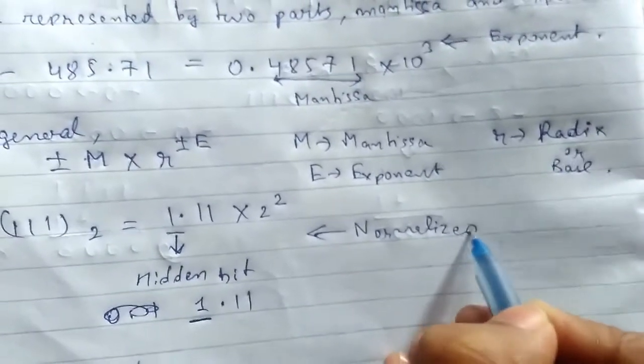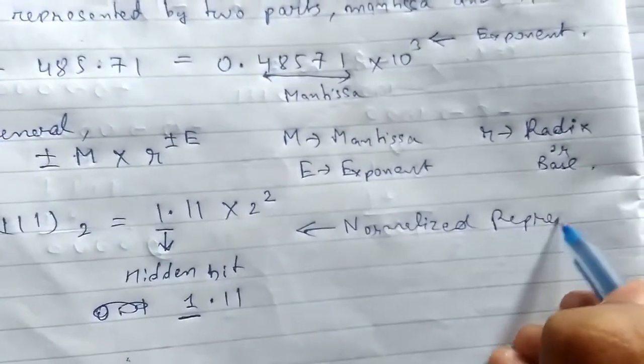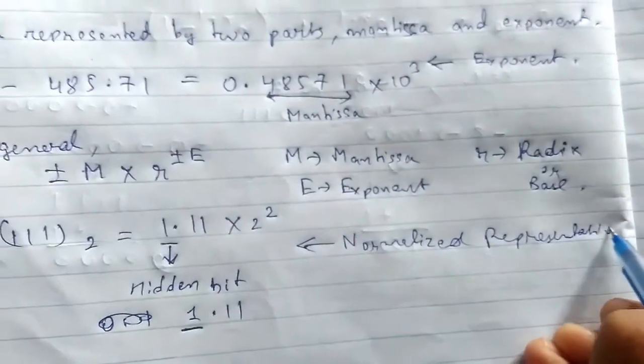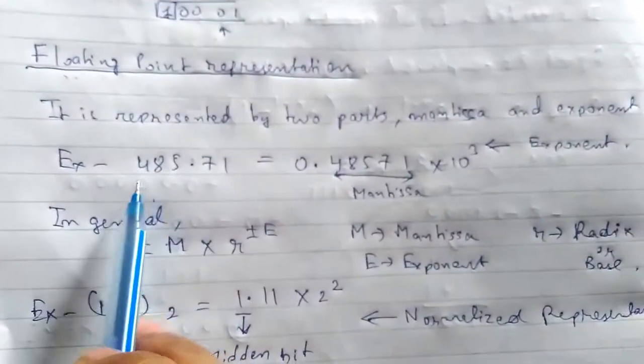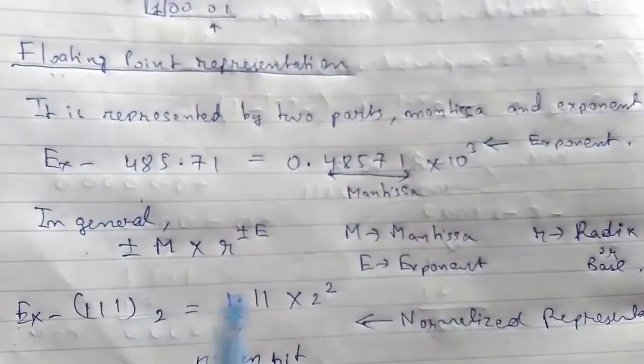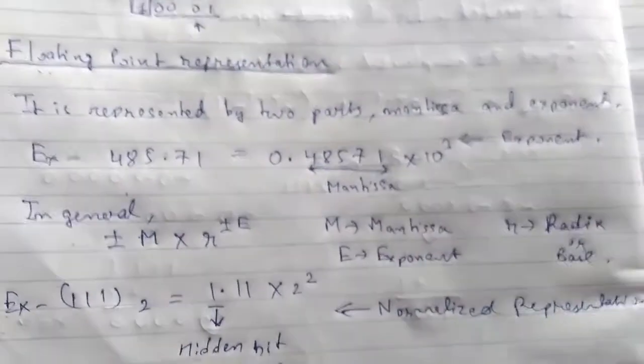I will explain it properly there. So this was the representation for floating point representation. Thanks for watching.